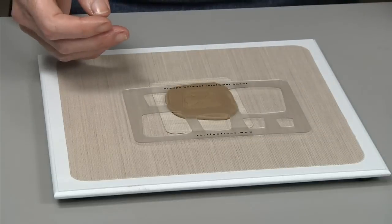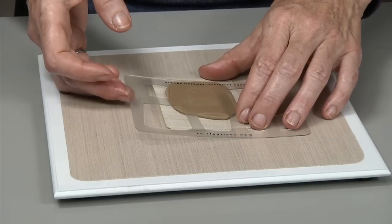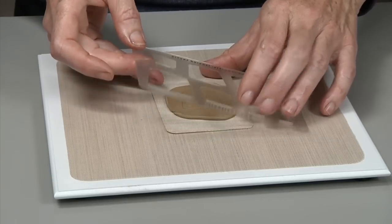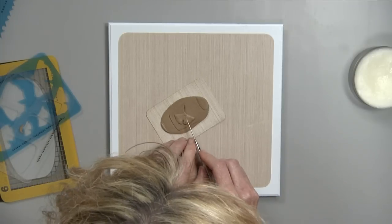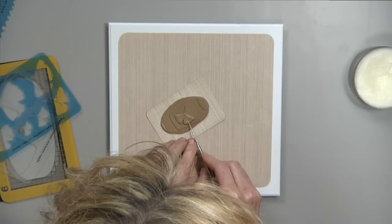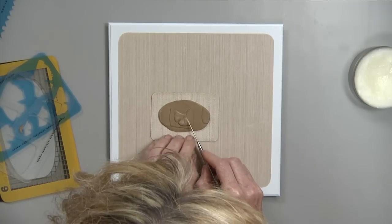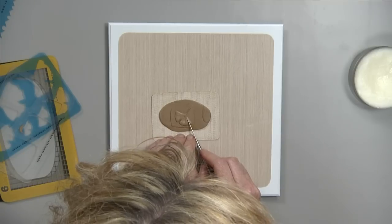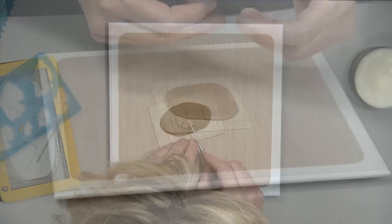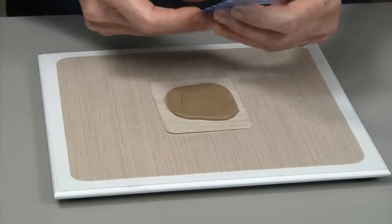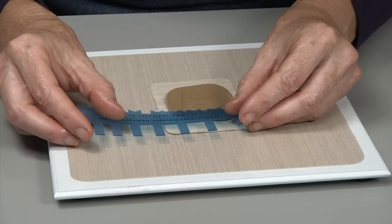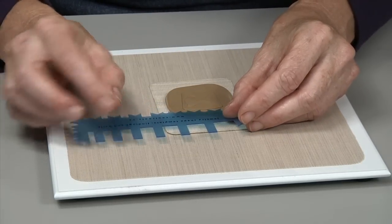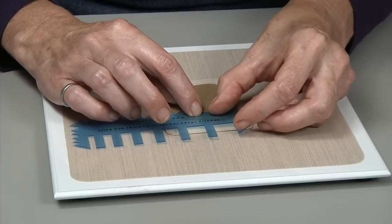I'm going to remove the templates and now I'm going to score some veins into the leaf so that it has a little more realistic look and then I'm going to use one of the round openings for my bail. I'm going to place that so that it lines up exactly with the top of the pendant.